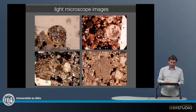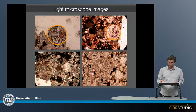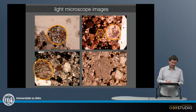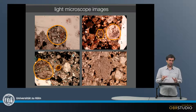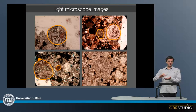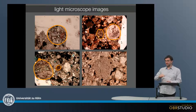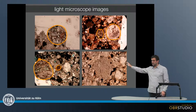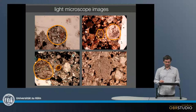Here you can already see a number of typical features: chondrules are always round to at least roundish, and they appear in various sizes — there are large chondrules, smaller chondrules, and tiny chondrules all in one. These size differences are in part sectioning effects, but the tiny ones are certainly not a sectioning effect.